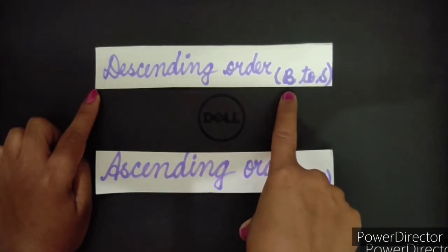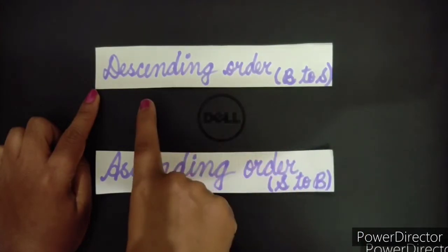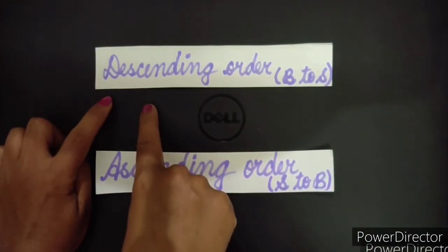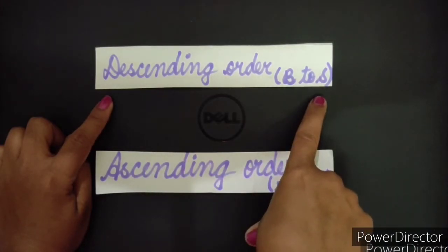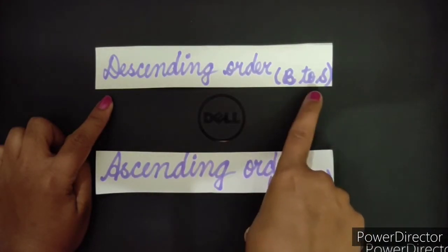So let's understand what is descending order. If you will see here, I have written B to S, big to small. Descending order is when we go from big number to small, big to small.